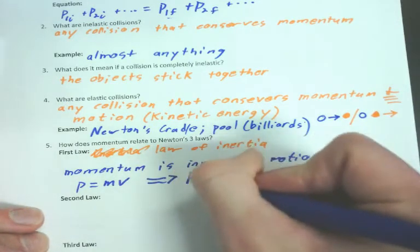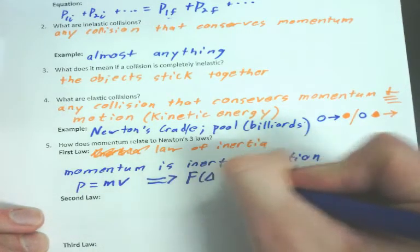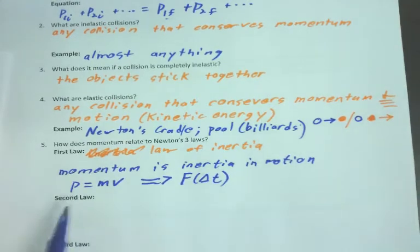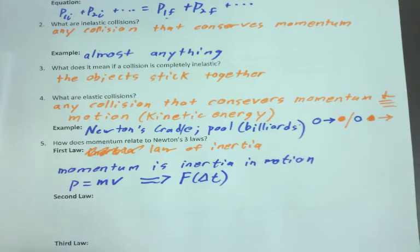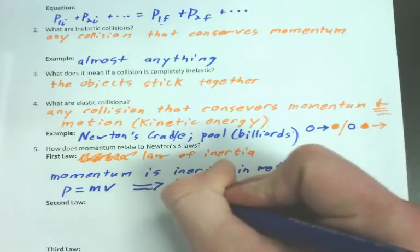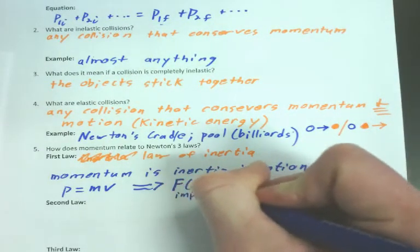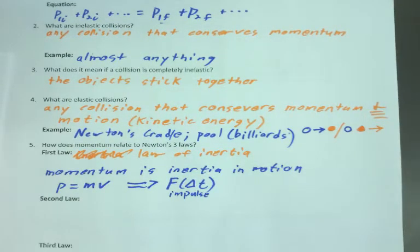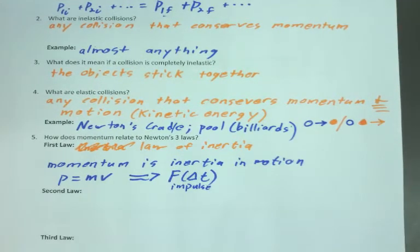Unless you apply an impulse, which is a non-zero net force. Objects will keep doing whatever their momentum is unless something changes them. Hence an impulse. Momentum is Newton's first law. That's what it is. It's just a different way of thinking about it. But it is Newton's first law.